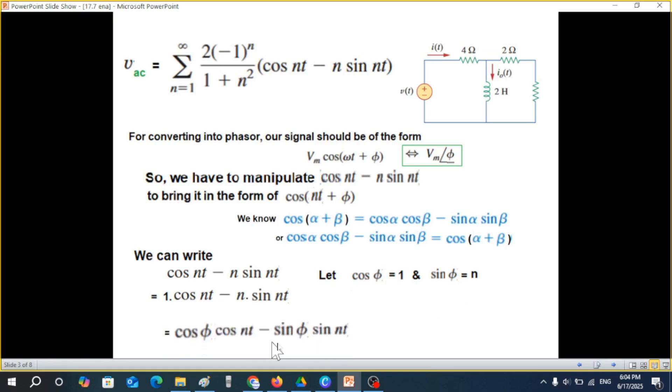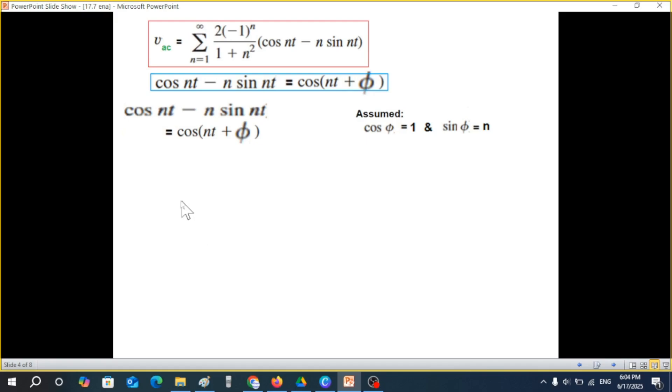So we have to manipulate this signal in this form. How can we manipulate if we write one with this? One multiplied by cos(nt) and the second one n multiplied by sin(nt). So this one is equal to cos(φ), and similarly this n is equal to sin(φ). So now our equation would become like this. For one, we're writing cos(φ)cos(nt) and here sin(φ)sin(nt). And now we can easily apply this formula.